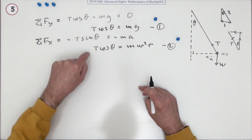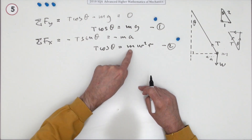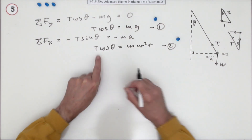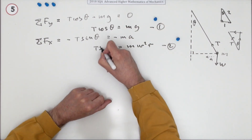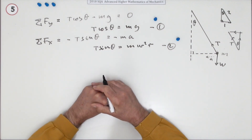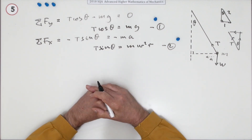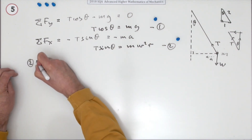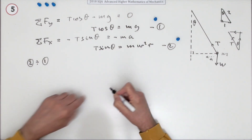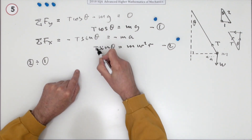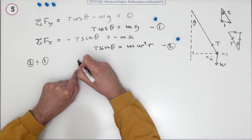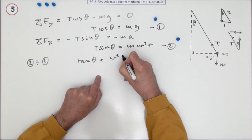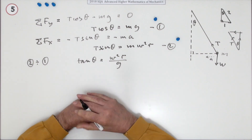We now have a pair of simultaneous equations. We can cancel the T's and the m's by dividing the equations. The useful way is equation two divided by equation one: the T's cancel, sine over cosine makes a tangent, the m's cancel, and we're left with tanθ = ω²r / g.